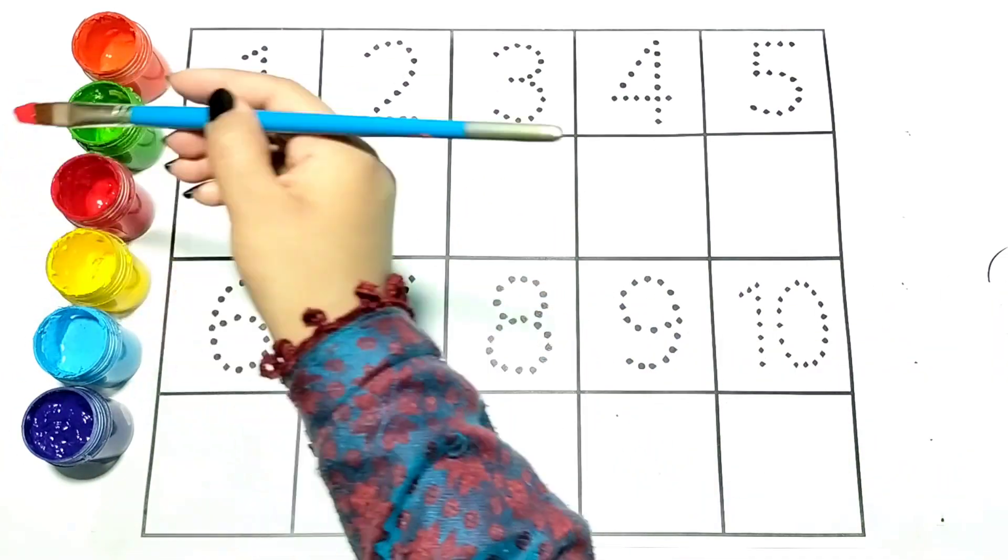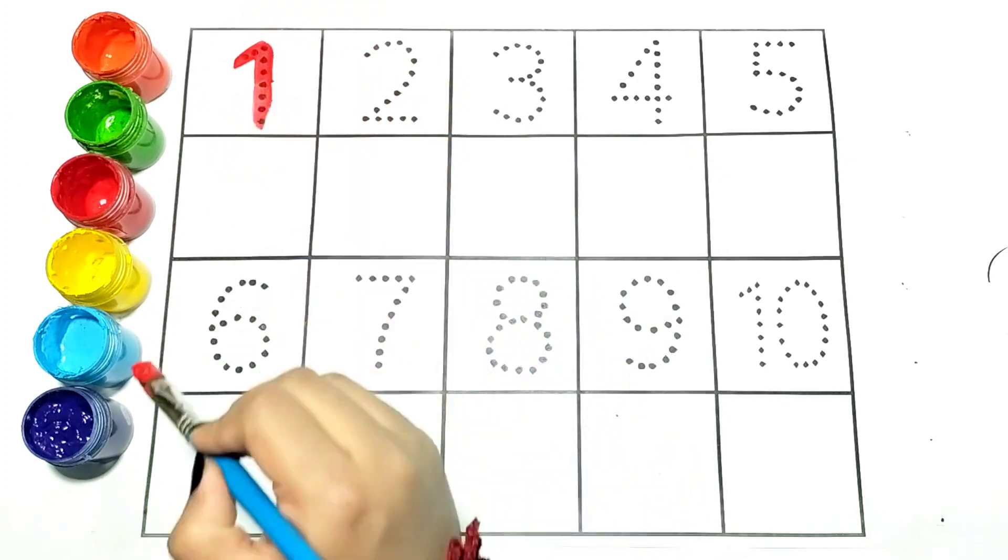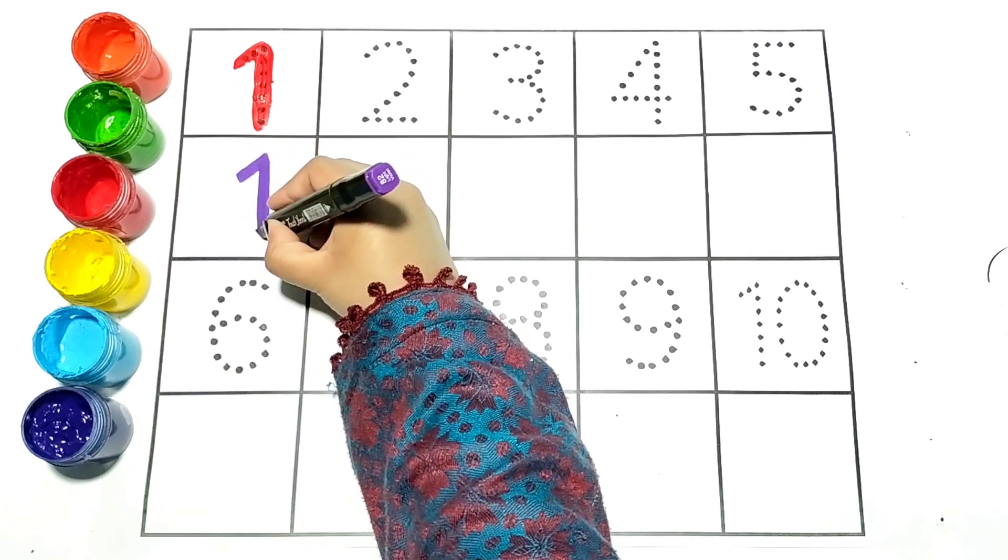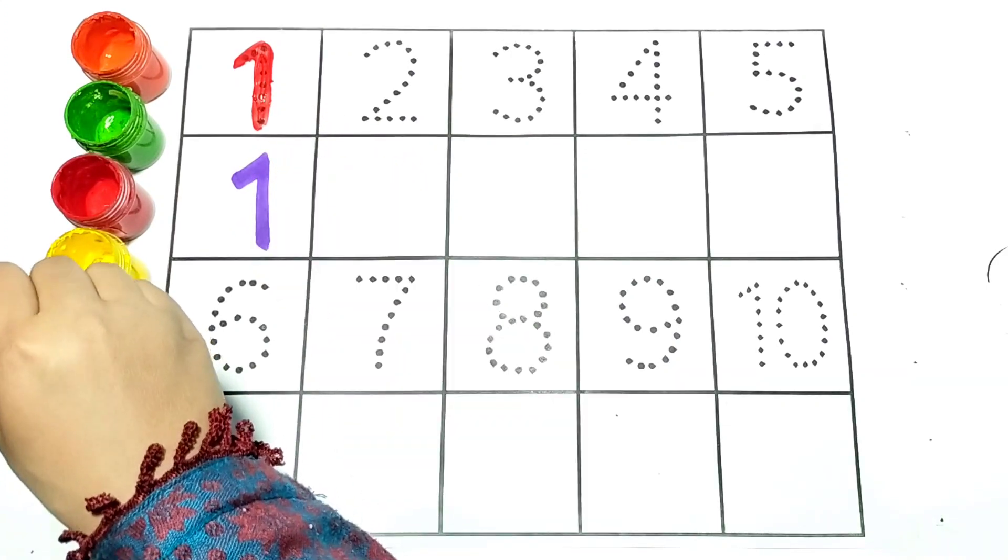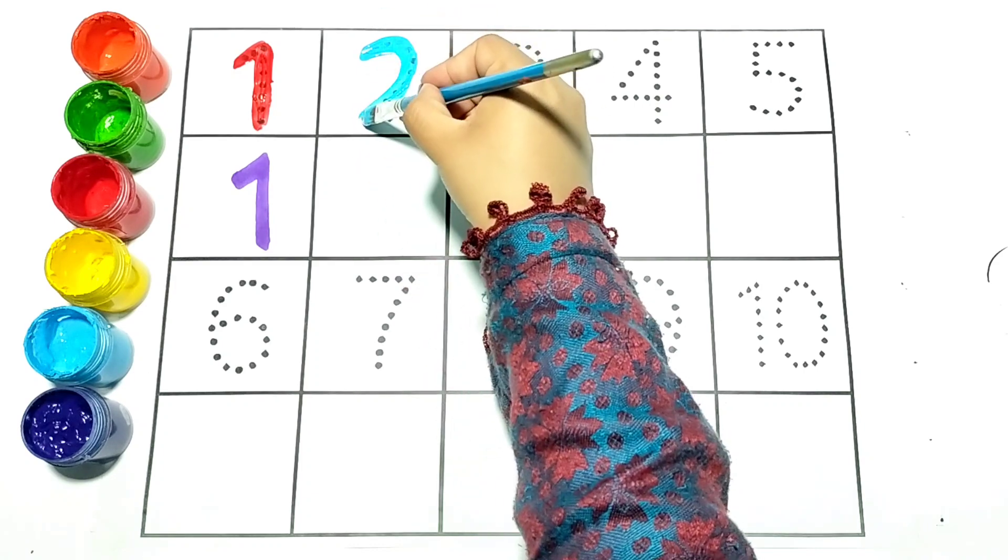Let's write the numbers with colors. Orange One. Blue Two.